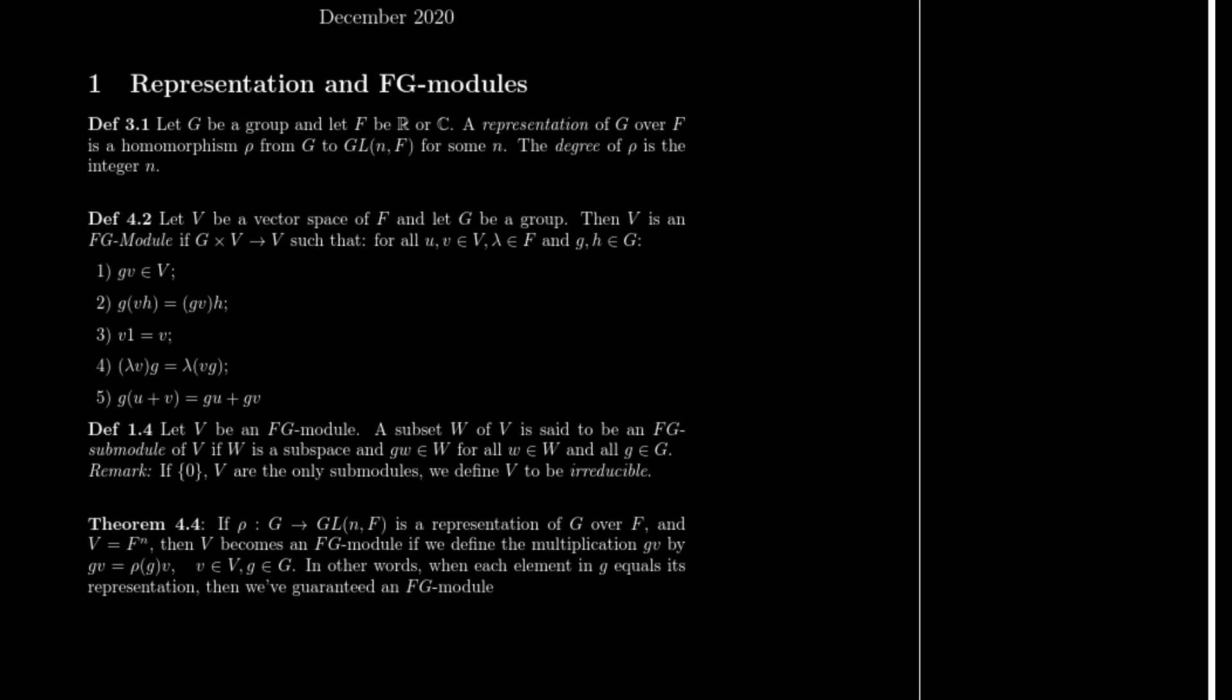One really cool thing that we're able to do with this, and it's going to be kind of the backbone to our search into Maschke's theorem, is the fact that we can make submodules of these. A subset W of the vector space V is going to be a submodule if W is a subspace and W also is closed under the group. That is, the group members times a vector inside of W will always be in W as well.